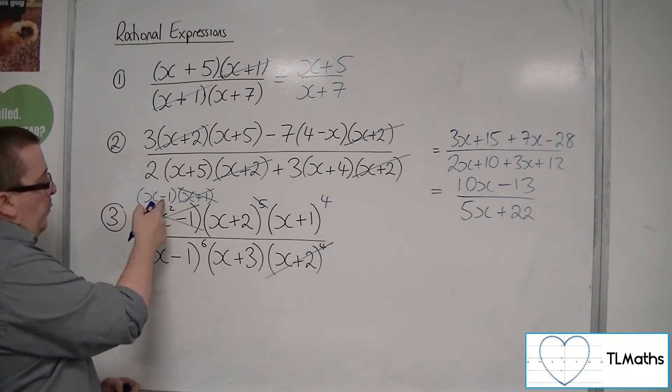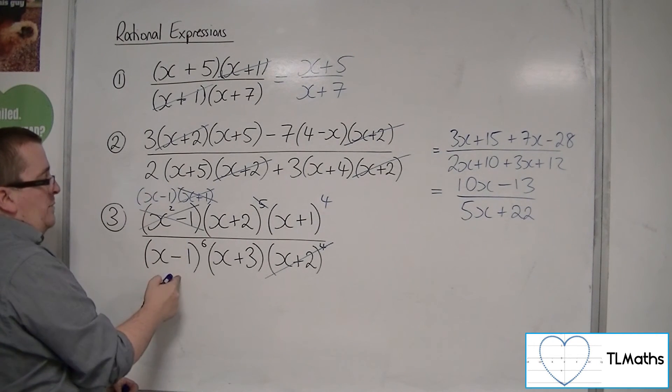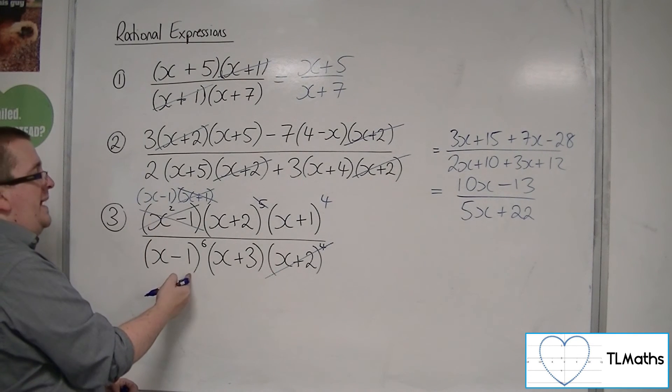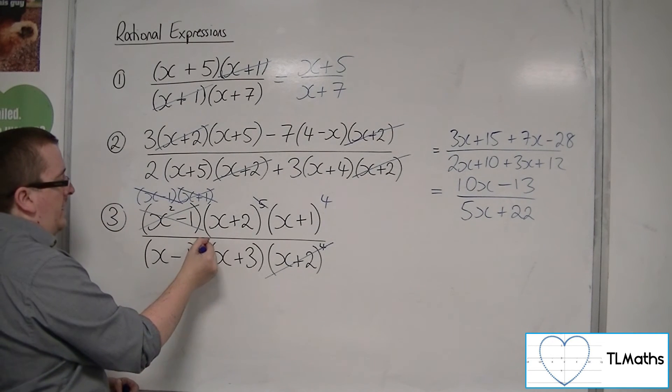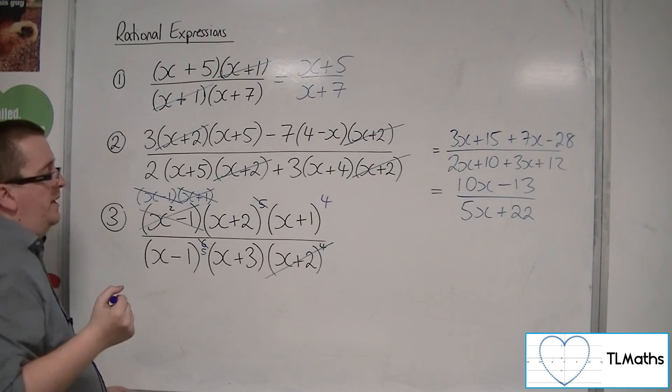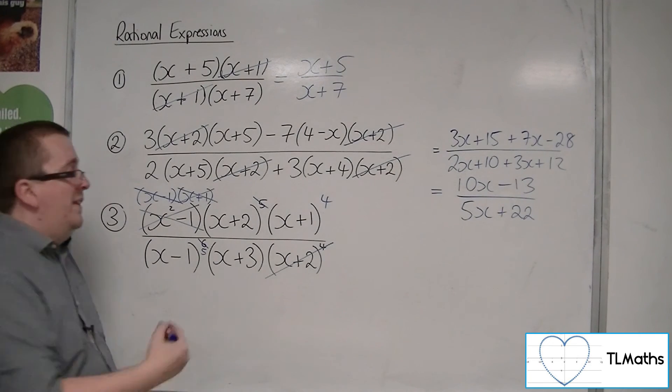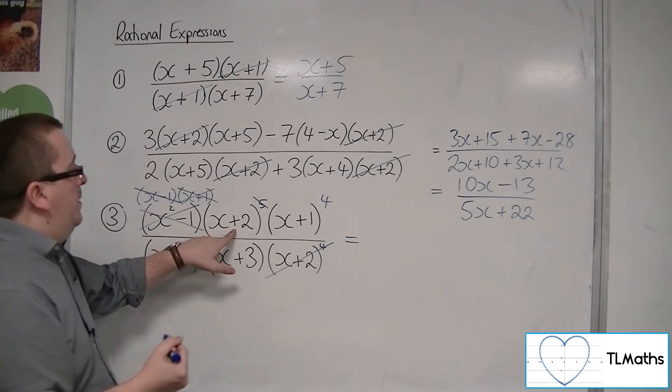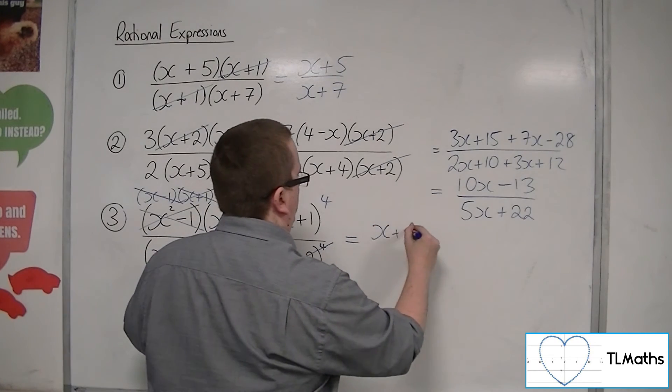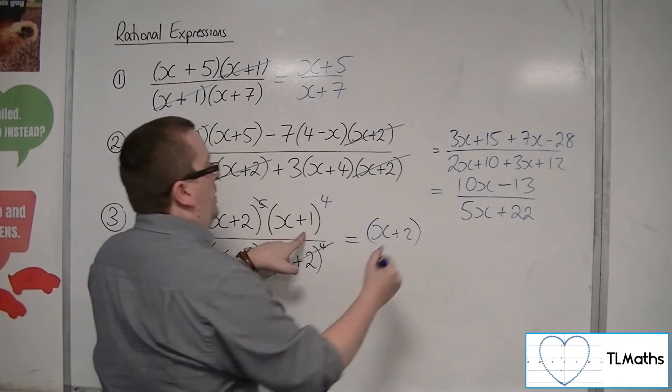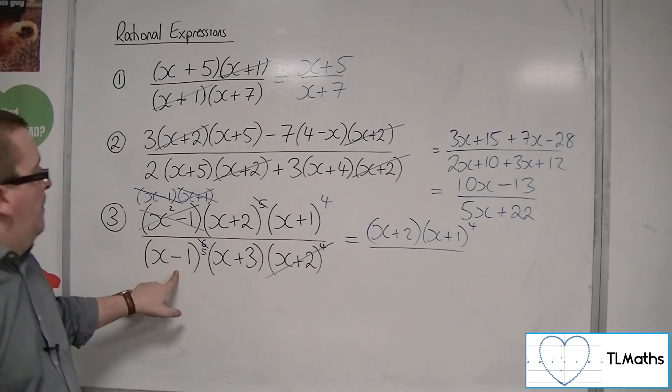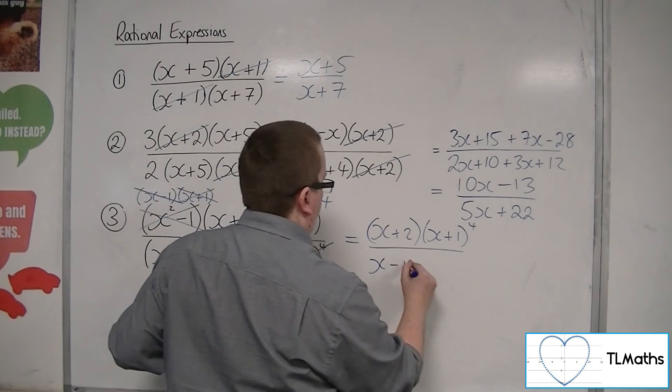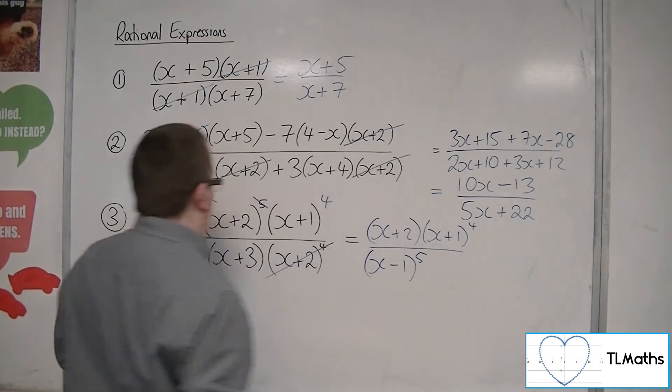I've got x minus 1 in the numerator, and x minus 1 to the 6 in the denominator. So, an x minus 1 can be cancelled from numerator and denominator. So, that one can go, and I can drop 1 from the denominator. So, what I have left is x plus 2, and x plus 1 to the 4, x minus 1 to the 5, and x plus 3.